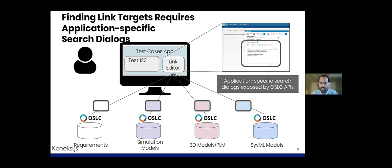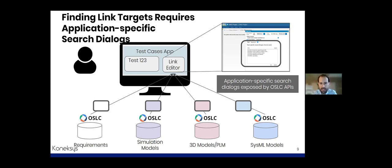OSLC understands that the search capability is specific to each application, but that it can be packaged in a standard way — in a dialog — that can be embedded in another application. Each OSLC API will expose a search dialog which can then be embedded, for example, in a test cases application to create a link to requirements or an element in another target application. The user-friendliness of creating links is fantastic. We're not forcing people to know about RDF or to depend on developers to manipulate RDF — with OSLC, that complexity is hidden away.